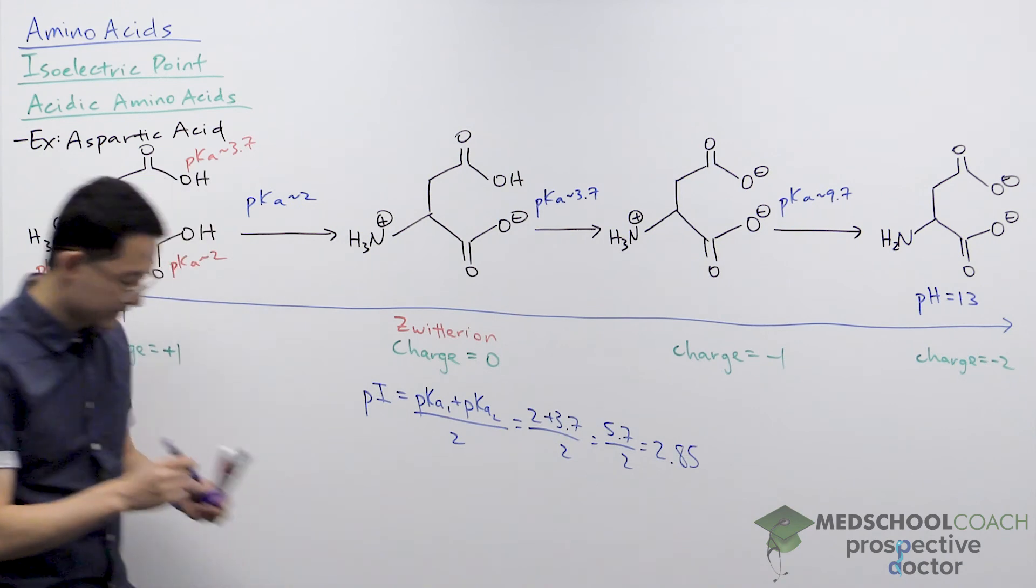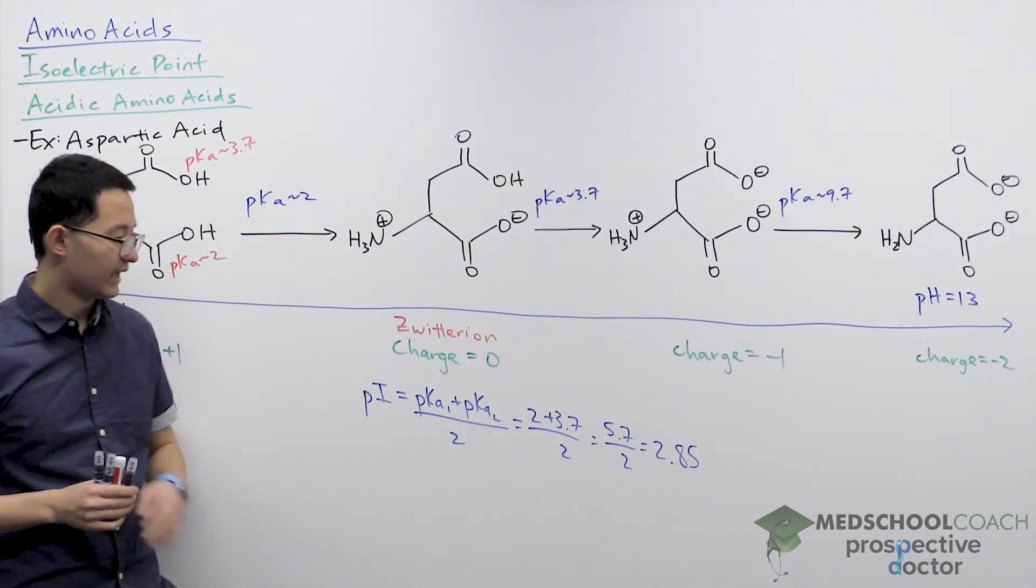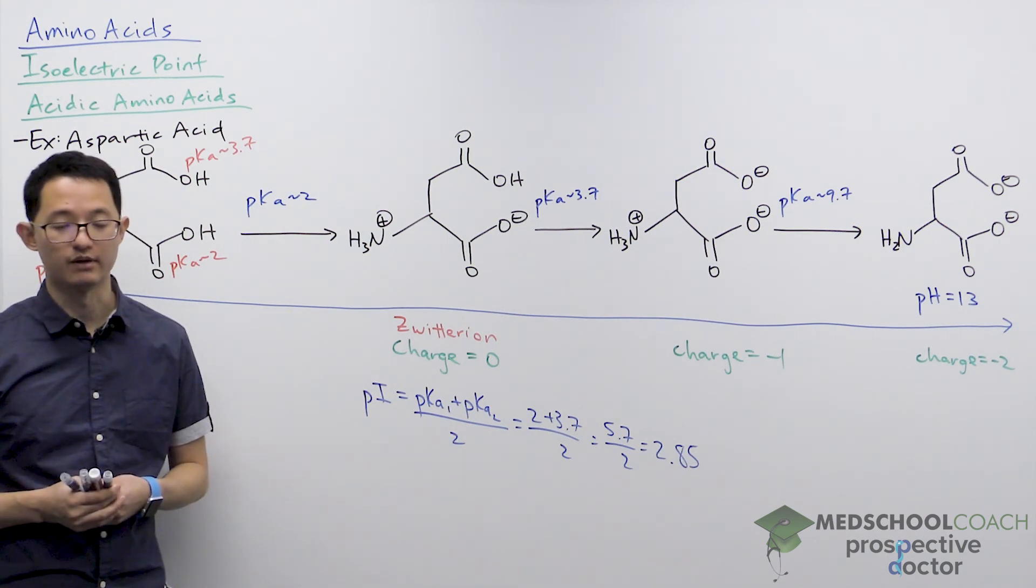So this is the isoelectric point of aspartic acid, and you can note that it is substantially lower than polar and nonpolar amino acids.